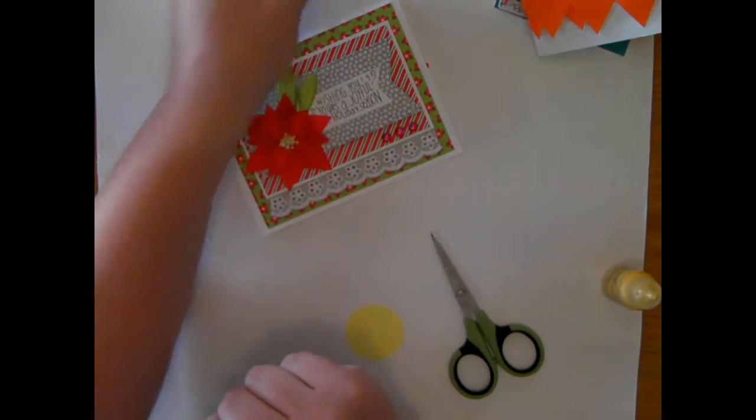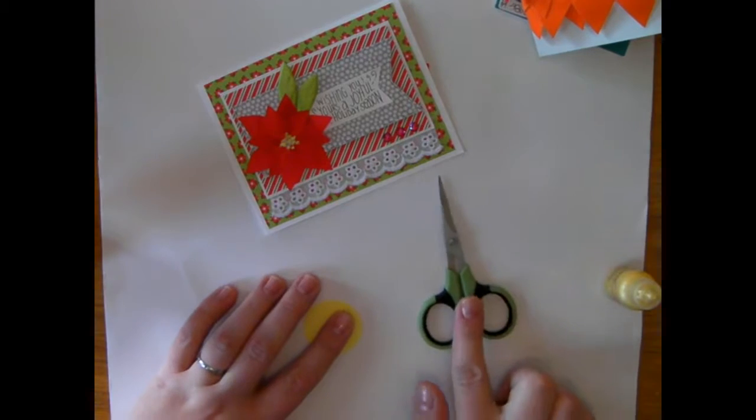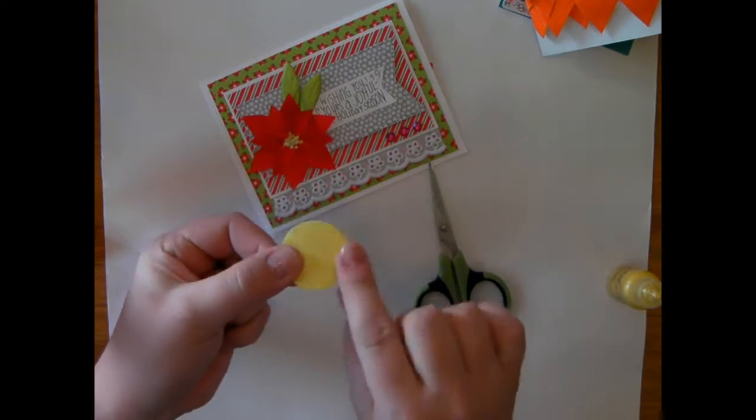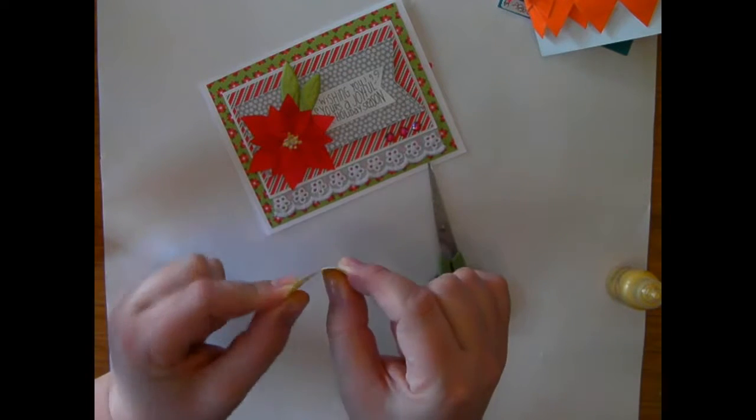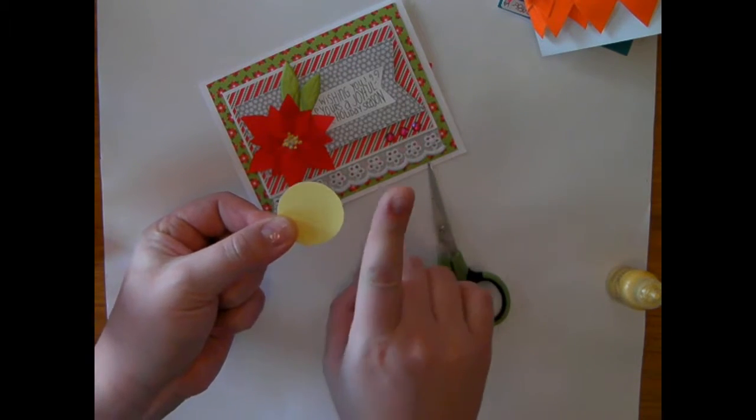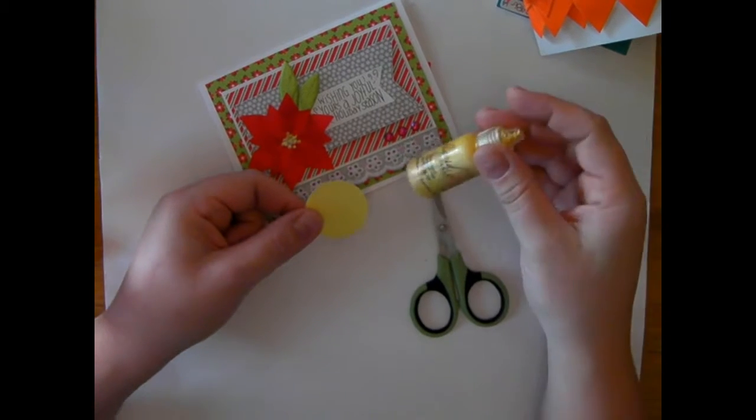So let's talk about what you're going to need to create this particular little flower. First thing is a really good pair of scissors that cuts ribbon easily. A little piece of cardstock cut into a circle. This one's a one inch punch circle. It can be bigger, a little bit smaller. It doesn't really matter and it doesn't need to be a perfect circle either.